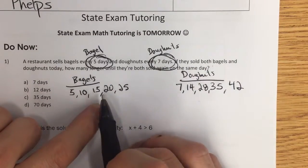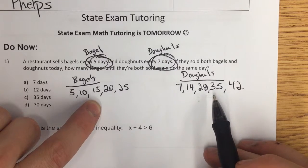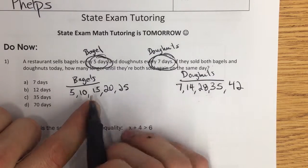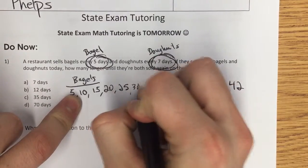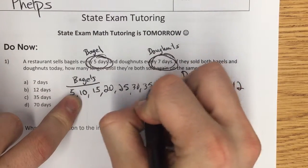What's the smallest number they'll share of these multiples? Well, I don't see any number they share yet, so maybe I should keep going. I'll look at bagels. I've got 5, 10, 15, 20, 25, 30, still don't share it,